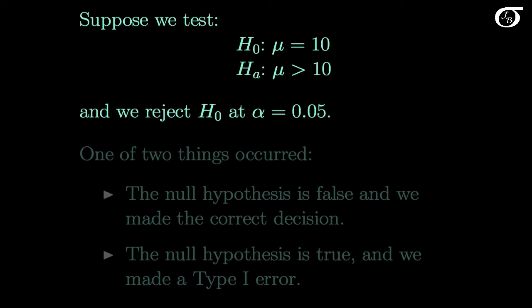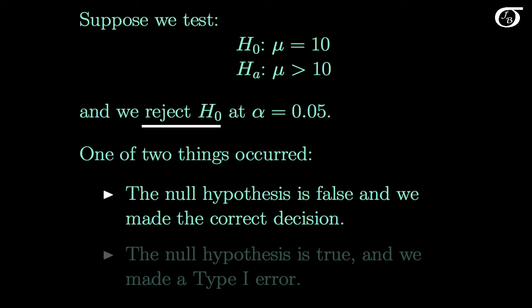Suppose we test the null hypothesis that mu is equal to 10 against the alternative that it's greater than 10, and we carry out the test in the usual ways and we end up rejecting the null hypothesis at an alpha level of 0.05. One of two things occurred: the null hypothesis is false and we rejected it, so we made the correct decision; or the null hypothesis is true and we rejected it, so we made a type 1 error. In practice, if we reject the null hypothesis, we are simply not going to know which one of these two things occurred.